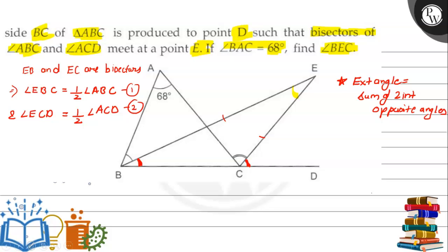Using this concept in triangle ABC, we can see that angle ACD is our exterior angle and it is equal to sum of two interior opposite angles which is 68 degrees and angle B. So angle ACD will be 68 degrees plus angle B. We can write this as angle ACD minus angle B equals 68 degrees. Let's take this as equation 3.